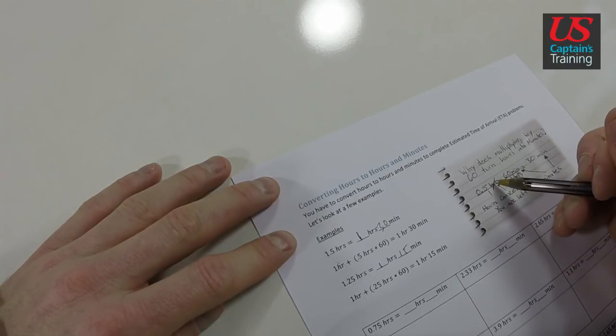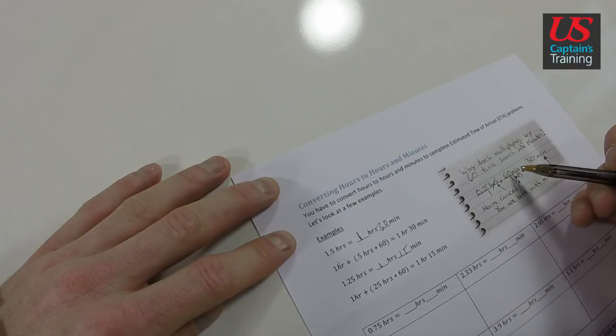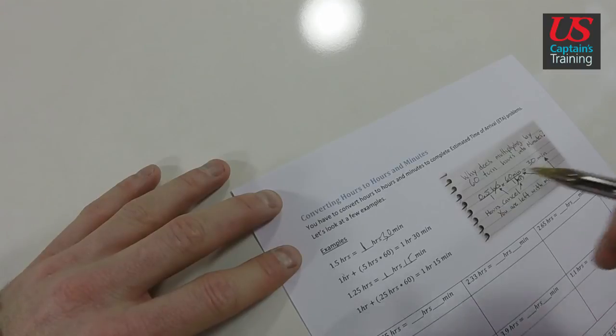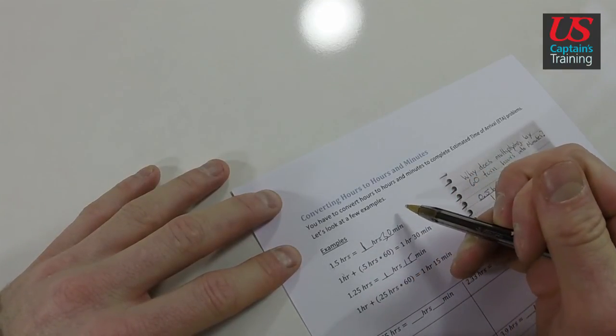What happens is, these hours are on top, these are on the bottom, they cancel off. You're left with minutes. So it's equal to 30 minutes. It's just 0.5 times 60 equals 30 minutes. These hours cancel, you're left with minutes. Don't let that confuse you. What you need to remember is this: to get from hours to minutes, you times by 60.